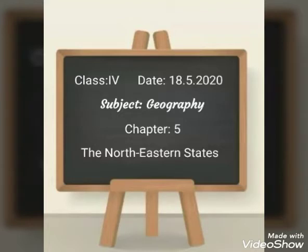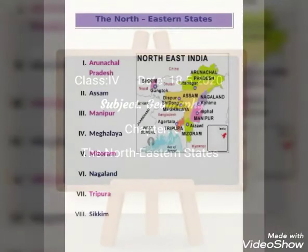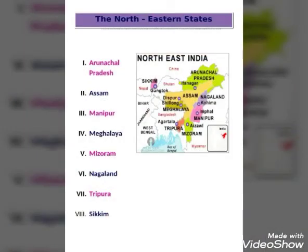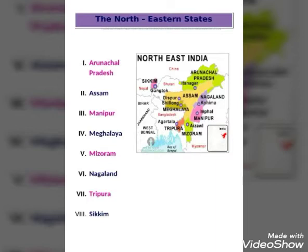Today we start Chapter 5: The North Eastern States. First, let's identify the states of North East India using the map on your first page. The eight states are: number 1, Arunachal Pradesh; number 2, Assam; number 3, Manipur; number 4, Meghalaya; number 5, Mizoram; number 6, Nagaland; number 7, Tripura; and the last one is Sikkim. We will know about these 8 states of North East India briefly today.